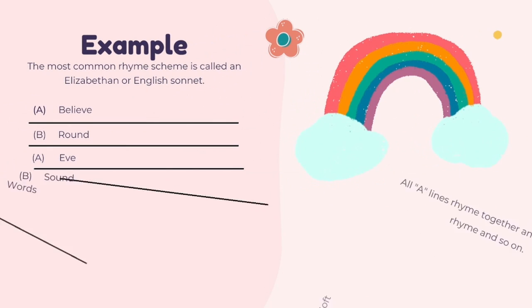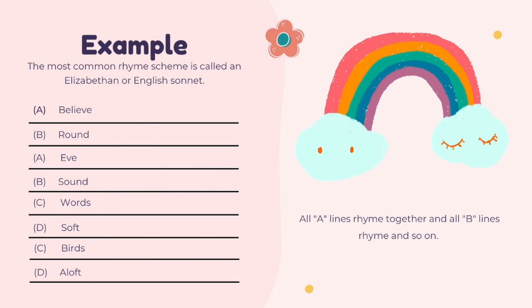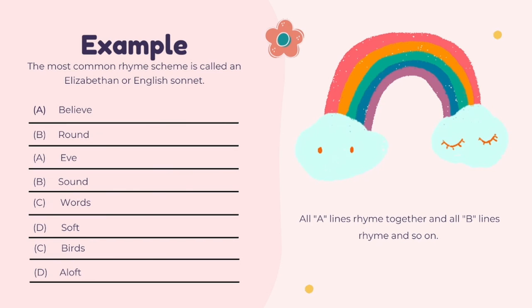The most common rhyme scheme is called an Elizabethan or English sonnet. As you can see, the letters represent the lines that rhyme together and they are alternating. So all the A lines rhyme together and all the B lines rhyme together and so on. For example, believe rhymes with eve, and round rhymes with sound.